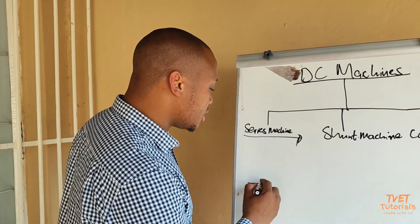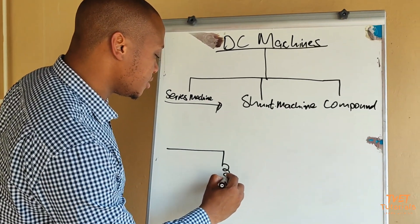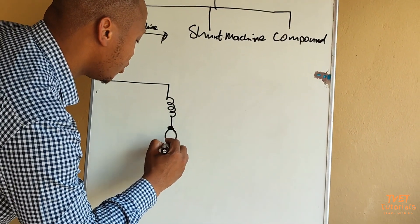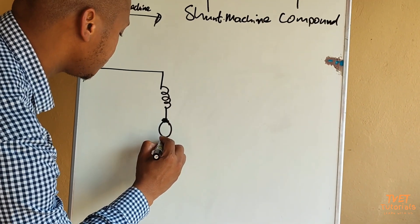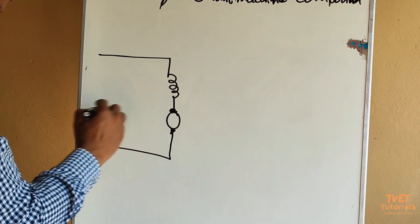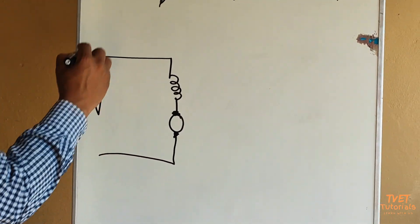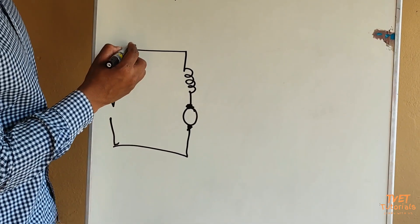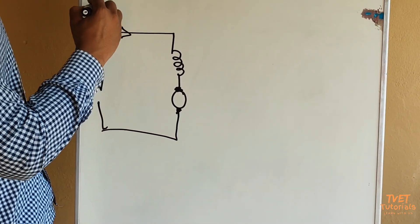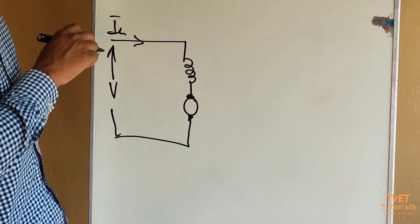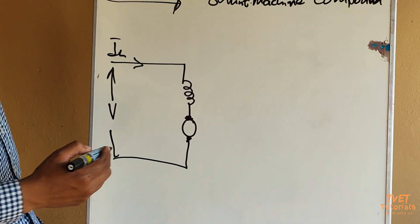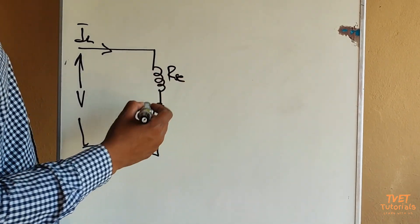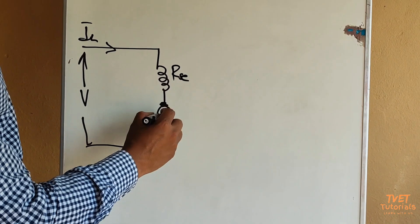So basically you would have a field winding connected in series to the armature of the machine. You have a supply voltage which is the voltage from your supply, and because there's a voltage there you will definitely have a current we refer to as IL which is the line current coming from the supply.